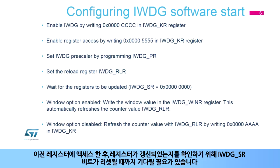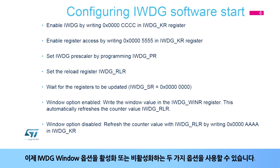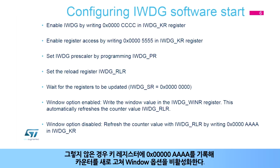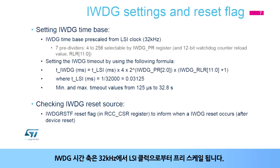After accessing the previous registers, it is necessary to wait for the IWDG SR bits to be reset in order to confirm that the registers have been updated. Two options are now available: enable or disable the IWDG window option. To enable the window option, write the window value in the IWDG WinR register. Otherwise, refresh the counter by writing 0x0000AAA in the key register to disable the window option.